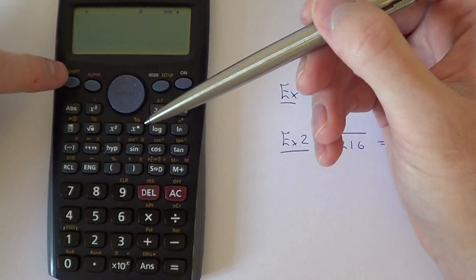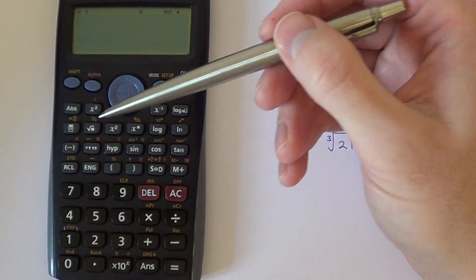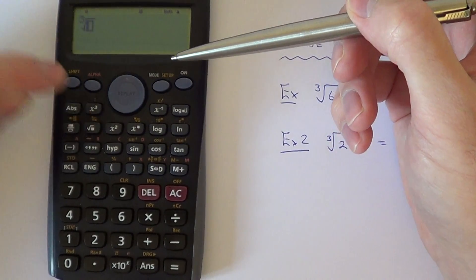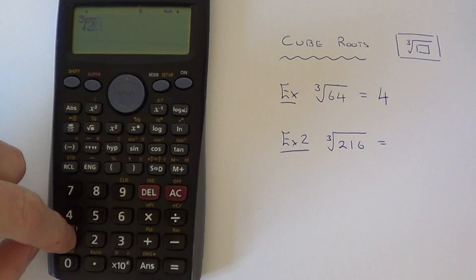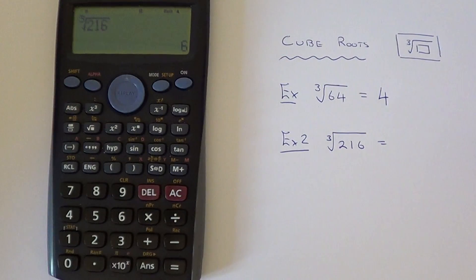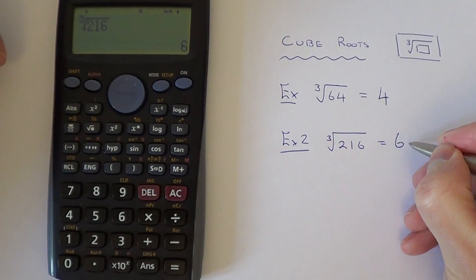So again we need to go shift and press the square root key and you see our cube root will come up and then type in 216 and the answer is 6.